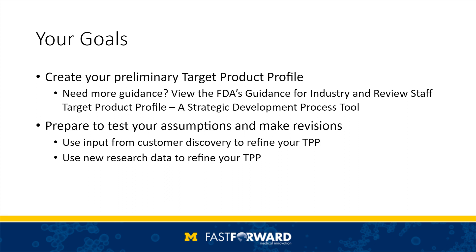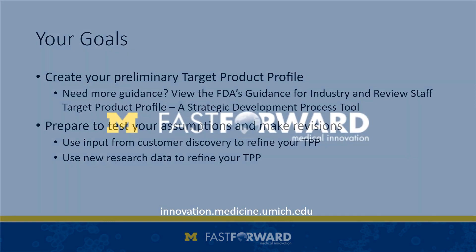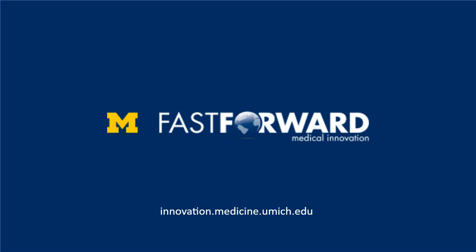Now that we've walked through all seven sections, it's your turn to create your preliminary TPP. For more detailed guidance, view the FDA's Guidance for Industry and Review Staff Target Product Profile, a strategic development process tool linked with this video. It provides useful guidance for components within each section and includes additional sections per drug labeling. Once you've completed your preliminary TPP, it's time to test your assumptions through customer discovery and translational research. Remember, the target product profile is an ever-evolving document and should be updated each time new information comes to light. For more information, contact Fast Forward Medical Innovation.